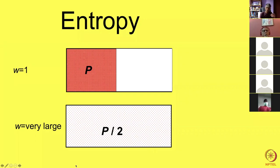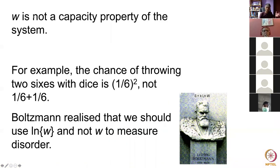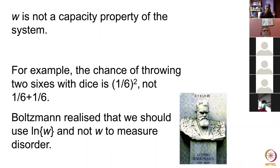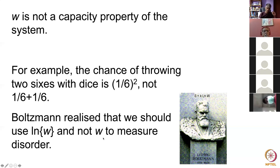This is a disordered system and this is an ordered system. Because the number of configurations is not a capacity property, we can't add configurations to work out total entropy. Boltzmann concluded that we need to use the logarithm of the number of configurations, because logarithms can be added — not the total number of configurations — as a measure of disorder.